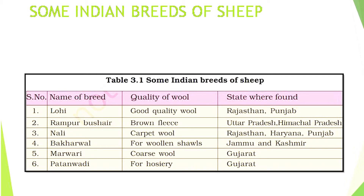The first breed is Lohi, found in Rajasthan and Punjab — wool quality is good. Second is Rampur Bushari, found in Uttar Pradesh and Himachal Pradesh — brown fleece. Third is Nali, found in Rajasthan, Haryana, and Punjab — carpet wool. Bakharwal is found in Jammu and Kashmir — wool used for woolen shawls. Marwari is found in Gujarat — coarse wool.